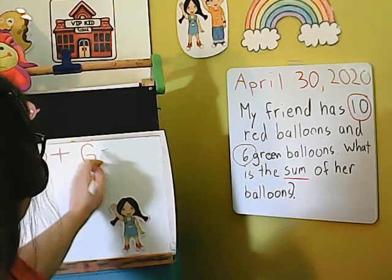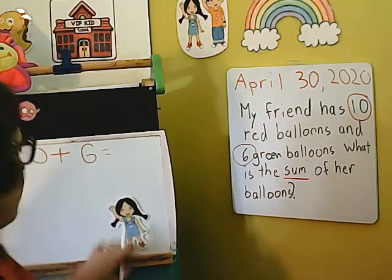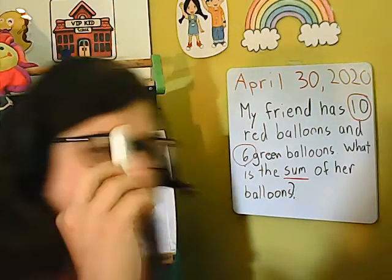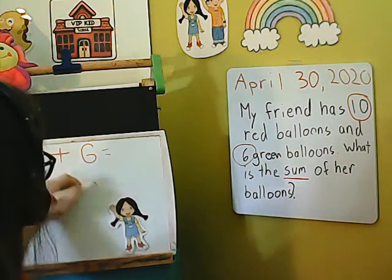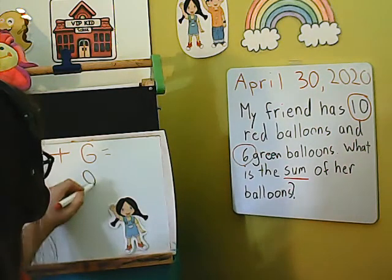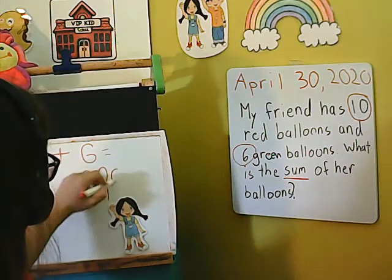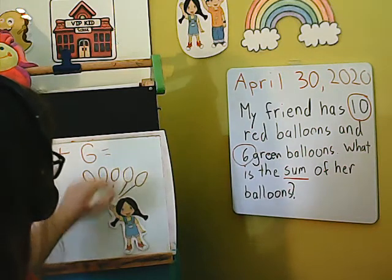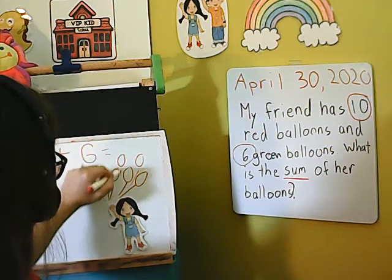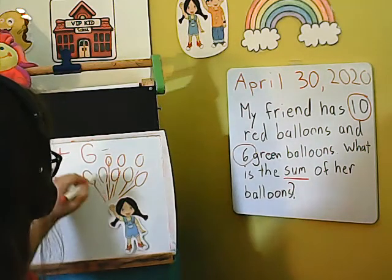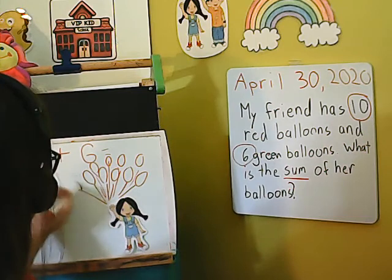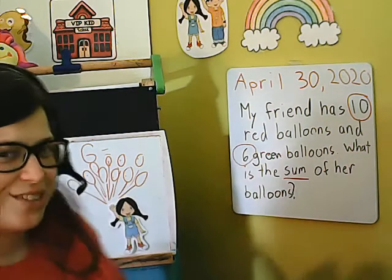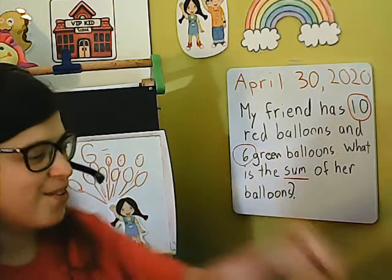I've already put my little friend up here. She has 10 red balloons, so I'm going to draw 10 — I'm going to give her 10 red balloons. 1, 2, 3, 4, 5, 6, 7, 8, 9, 10 red balloons.